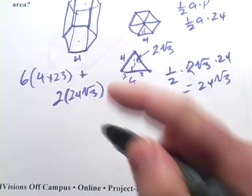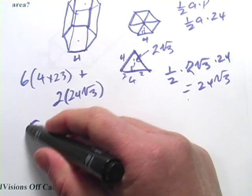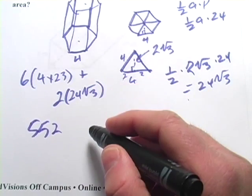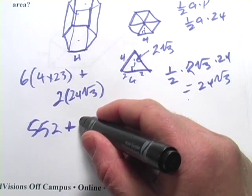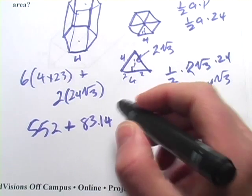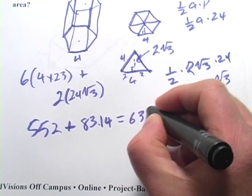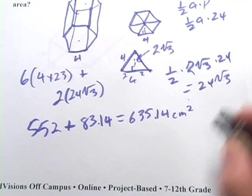And then we have a little bit of calculating to do. So our sides add up to 552. And our top and our base add up to 83.14, let's say. For a grand total of 635.14. And this was centimeters squared.